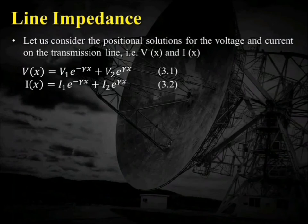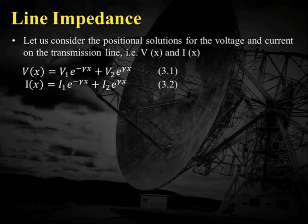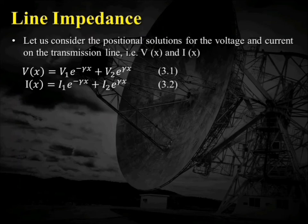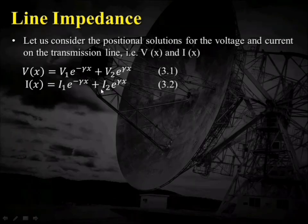We have already derived in the previous lecture the equations V(x) and I(x), equal to V1 e to the power minus gamma X plus V2 e to the power gamma X, and I1 e to the power minus gamma X plus I2 e to the power gamma X, named here as equations 3.1 and 3.2. V(x) and I(x) denote that voltage and current are functions of X.